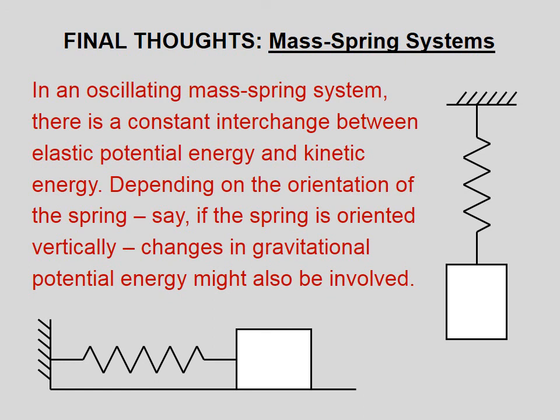In an oscillating mass spring system, there is a constant interchange between elastic potential energy and kinetic energy. Depending on the orientation of the spring, say if the spring is oriented vertically, changes in gravitational potential energy might also be involved. So here we just covered a horizontally oriented mass spring system, but the same ideas apply for a vertically oriented mass spring system.